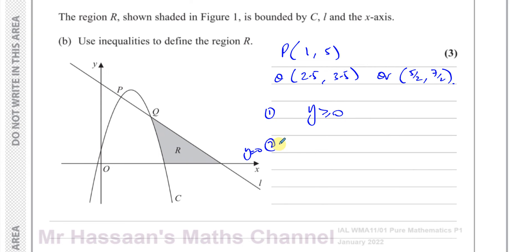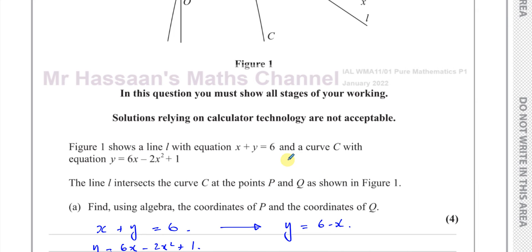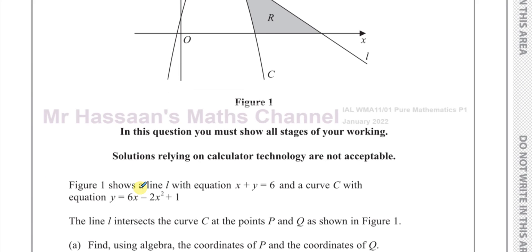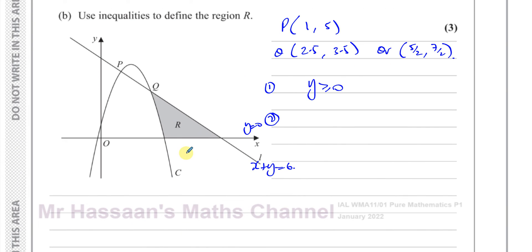The second inequality would be when it's below the line. The equation of the line was x + y = 6. So it's below the line x + y = 6, which means x + y ≤ 6. That describes the region below the line.